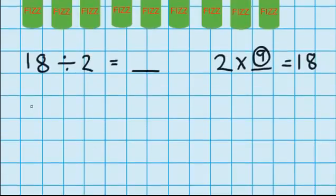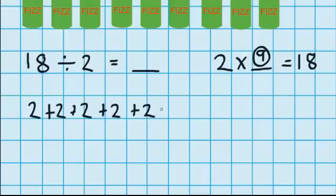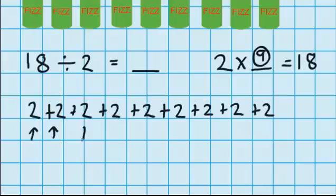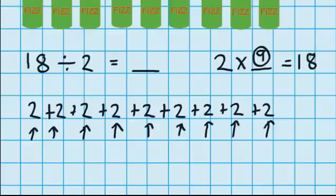Or I could use some repeated addition: 2 plus 2 is 4, plus another 2 is 6, plus another 2 is 8, plus another 2 is 10, plus another 2 is 12, plus another 2 is 14, plus another 2 is 16, plus another 2 is 18. And you can see that I've got 1 group, 2 groups, 3 groups, 4 groups, 5 groups, 6 groups, 7 groups, 8 groups, and 9 groups. So we've got the same answer using multiplication and addition, which is what you'd hope for.